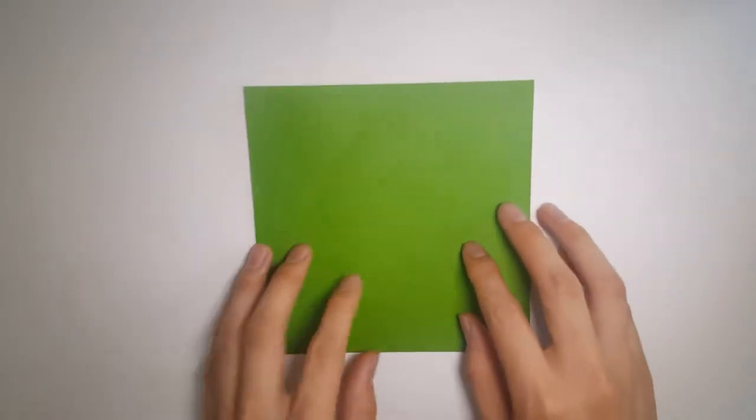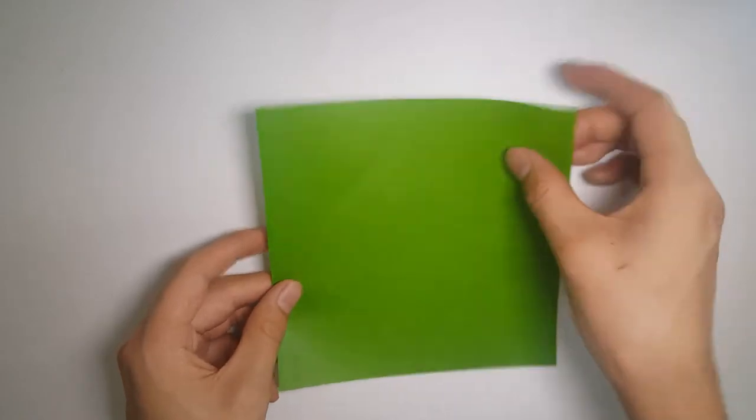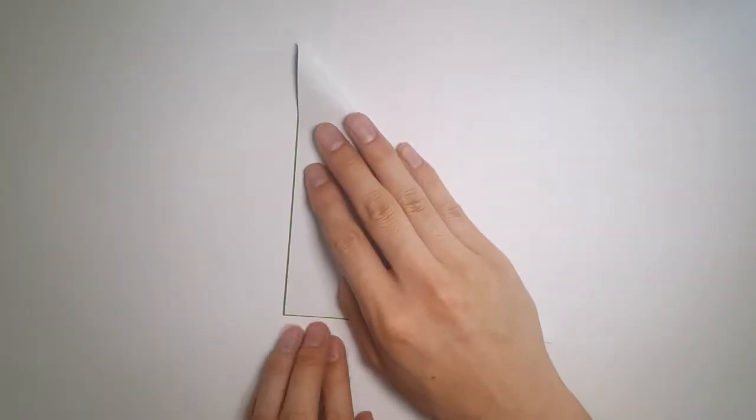First off, with a square piece of paper, making sure it's color-side out, we're just going to do two diagonal folds and unfolding them right after one another.